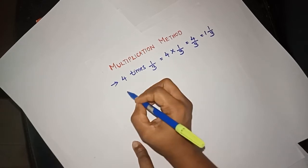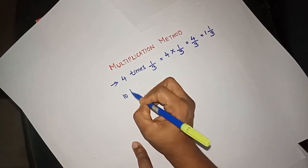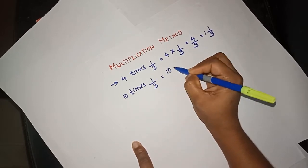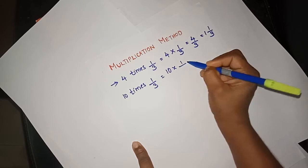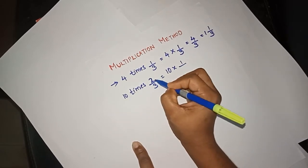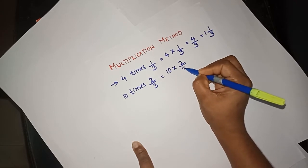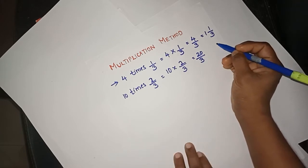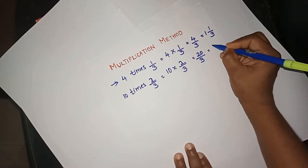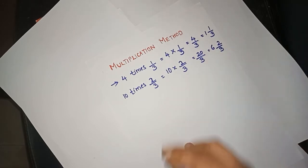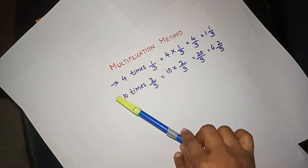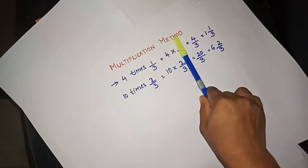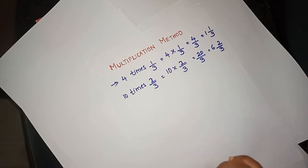How do we write it in 10 times? 10 times 1/3. What we can do in this class is multiply 10 into 2/3. We will multiply 10 into 2/3. This is the multiplication method.